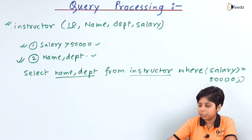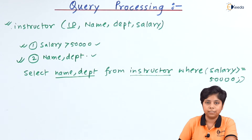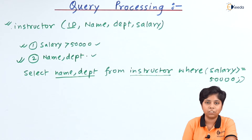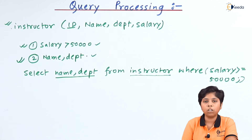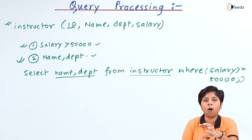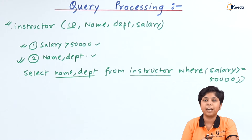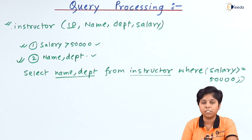My first condition is: salary is greater than or equal to 50,000. In this way we can build a query. We then parse this data and translate it into relational algebra, since we can only perform operations once a relational algebraic operation is applied — it can be a set operation, arithmetic operation, selection, or projection.